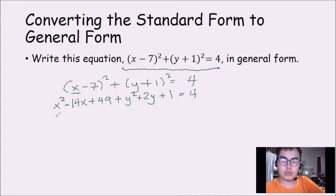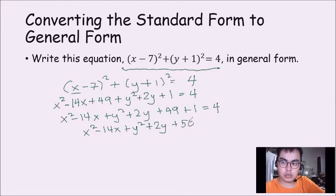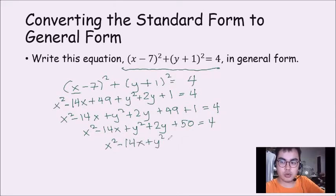What we are going to do here is arrange according to the variables, then copy the rest. We're going to add 49 with 1, so it will become 50. Then in order to make the right-hand side 0, we are going to subtract both sides by 4 since the number at the right-hand side is 4.